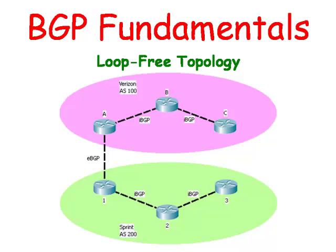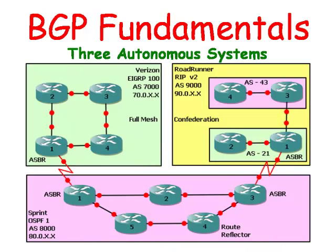In other words, router B can advertise to router A, and router A can advertise to router 1, and router 1 can advertise to router 2. But router 2 cannot advertise that same route, learned from the Verizon network, directly to router 3 — it would have to have a neighbor statement linking router 1 with router 3. In future videos, we're going to look at how we can create logical full mesh routers using route reflectors and confederations in order to manage large groups of routers.